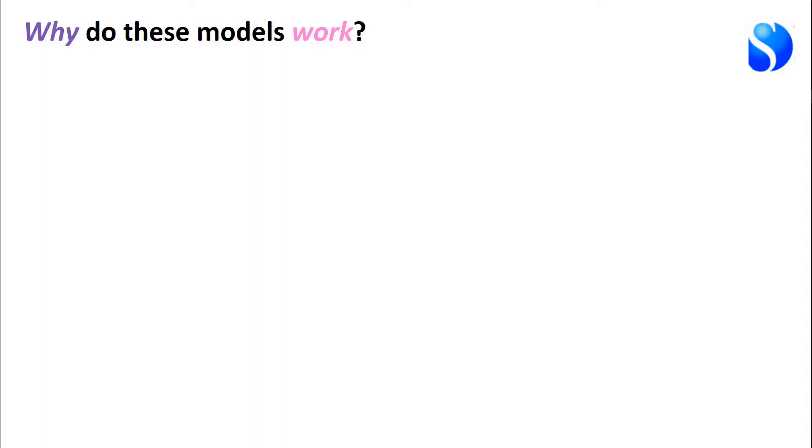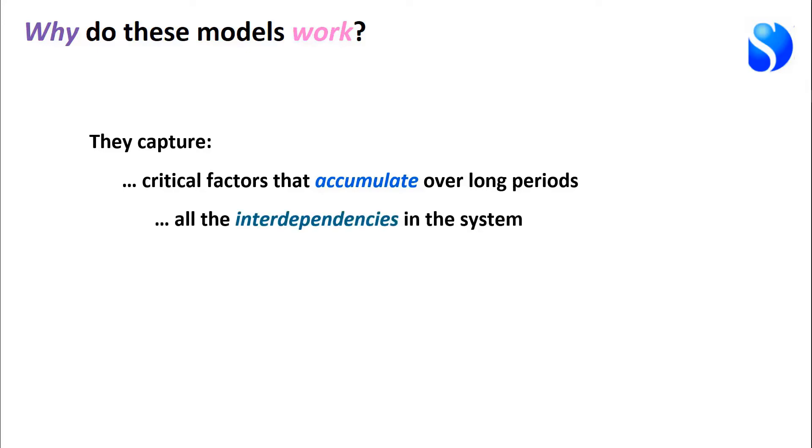The reason these models work is that they capture explicitly on the screen some critical things. The first is that key factors in these models accumulate over long periods of time—things like customer numbers, staffing, product range changes, or investments in capacity that change over long periods of time. They capture all of the interdependencies in the system. Everyone says they want joined up plans—well this is how to get joined up plans. And when you do the joining up, what you discover is that there's feedback going on. You've got reinforcing feedback driving growth or driving collapse in your business, or you've got feedback mechanisms that stop you making progress.